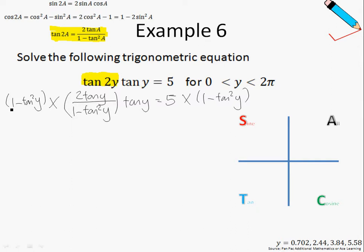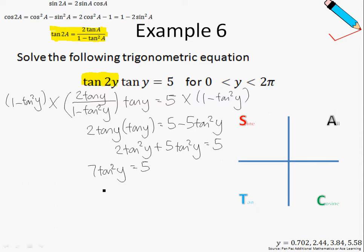By doing so, this will eliminate the denominator on the left hand side of the equation. I'll end up with 2 tangent y times tangent y equals, then concurrently I will expand this side of the equation. So 5 times 1 will give me 5 minus 5 tangent square y. If I simplify further, I would just have 2 tangent square y. Let me shift the negative 5 tangent square y over to the left hand side, so plus 5 tangent square y equals 5. Simplifying this a little bit further, I'll have 7 tangent square y equals 5. And simplifying further, tangent square y is equals to 5 over 7.